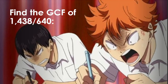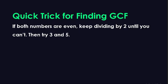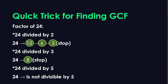Now the tricky part is how to get the GCF of a large number quickly. Here's the trick: if both numbers are even, keep dividing by 2 until you can't anymore, then check for other factors like 3 or 5. It's the fastest way to get to the simplest form.